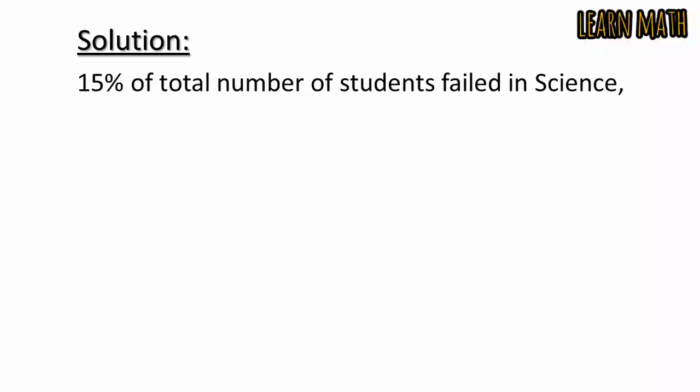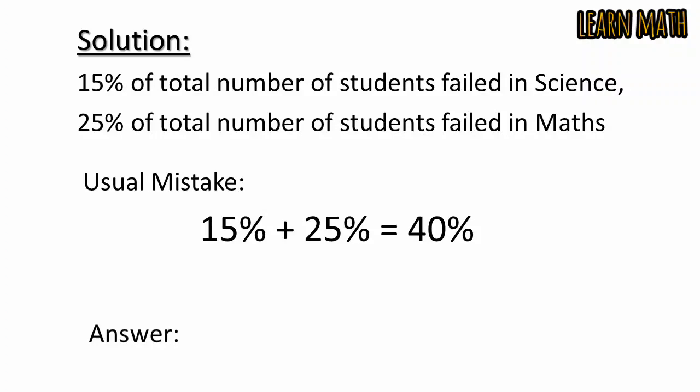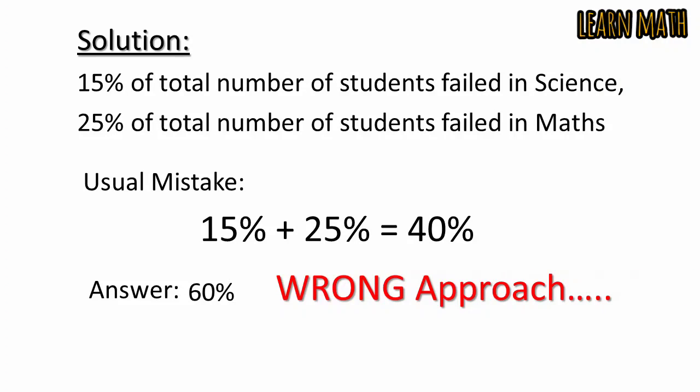Let's begin to solve the question. Given 15% of total number of students fail in science, and 25% of total number of students fail in maths. The usual mistake people are doing to solve this question, they just add 15% plus 25% and they get 40%. And then the answer is 60%. But this is a wrong approach. This is wrong.